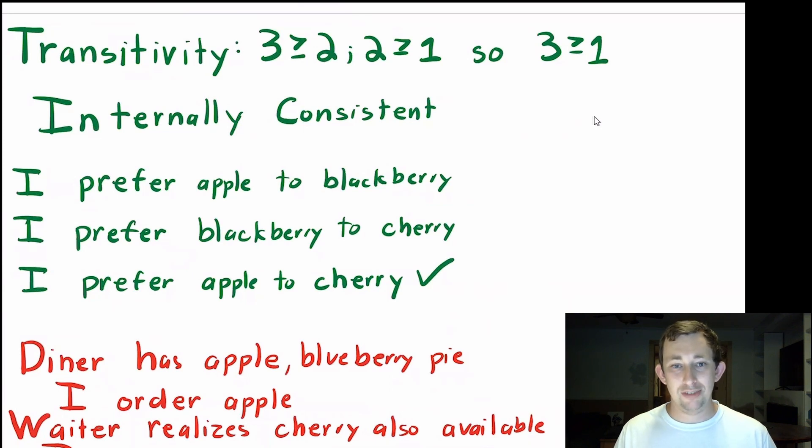So a good example of transitivity, a preference that is transitive: If I say that I prefer apple to blackberry, and I prefer blackberry to cherry, and then I follow that up by saying I also prefer apple to cherry, that is transitive because if A is greater than B, B is greater than C, then A should be greater than C, and I've demonstrated that here, so I'm transitive.